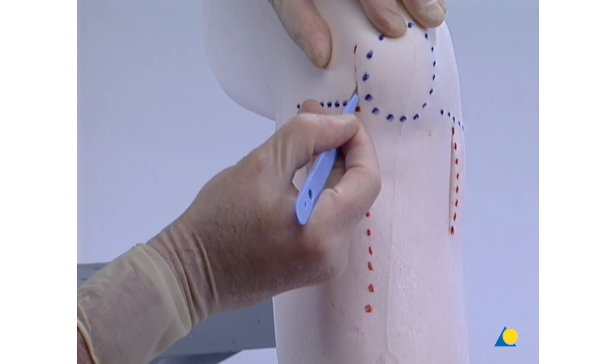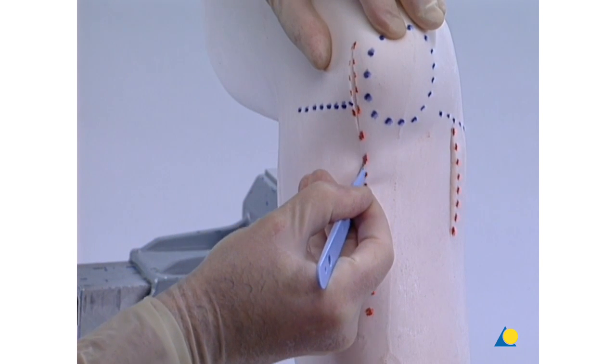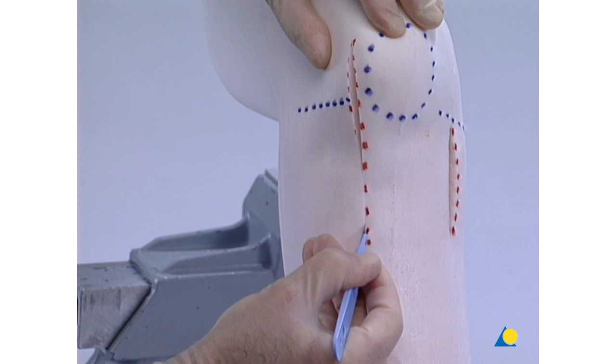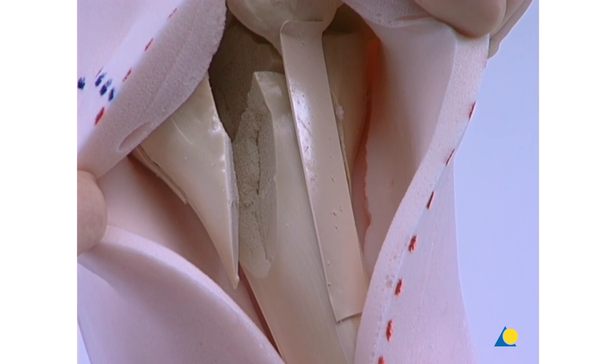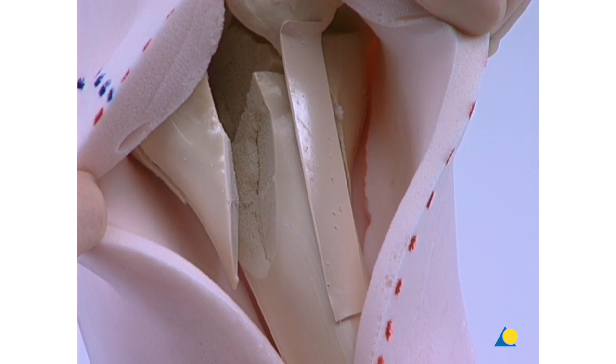For the surgical approach, a skin incision is made running laterally to the patella and tibial tuberosity. It proceeds directly down to the bone without separating the tissue layers.